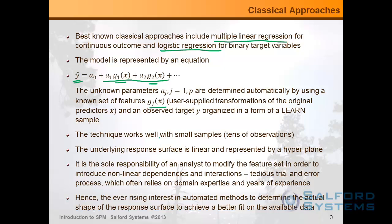This technique works well with small samples — there is no doubt about that, and there are many studies where classical regression is proven to be very powerful. The underlying response surface is linear in the set of transformed variables, which are supplied by the analyst. Therefore, it is the sole responsibility of the analyst to modify the feature set in order to introduce nonlinear dependencies and interactions. With classical linear regression, you face head-on the problem of variable selection and, more importantly, variable transformations. It is your responsibility to guess and try what transformations you may need — this is the essence of the conventional classical approach.